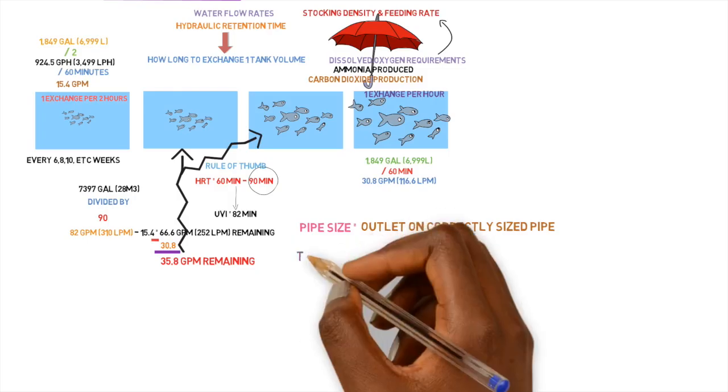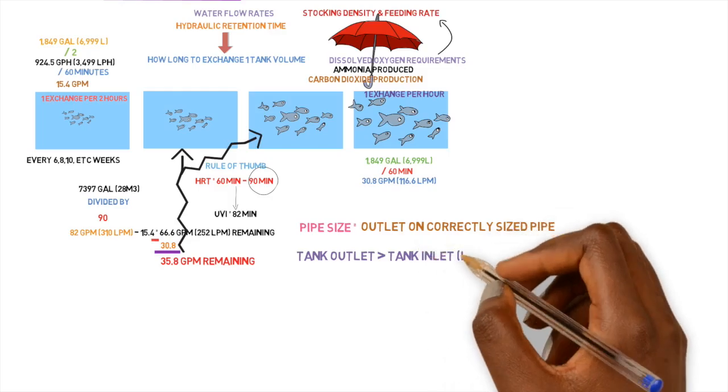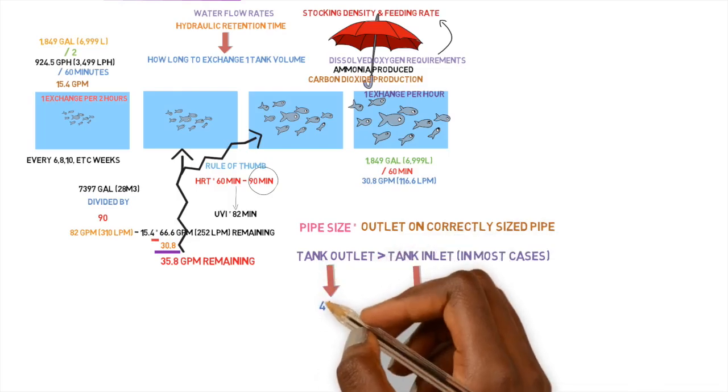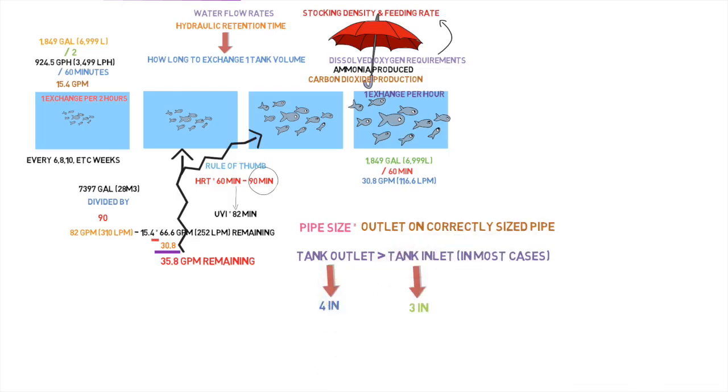And for the outlet, of course, the outlet cannot be the same size as the inlet. So if your inlet is three inches, and that's how much is being supplied in there, then your outlet is going to have to be bigger because the gravity does not accept the same amount of flow as a pressurized pipe. Pressurized pipe can push out way more volume in a three inch pipe than what gravity can accept in a three inch pipe.